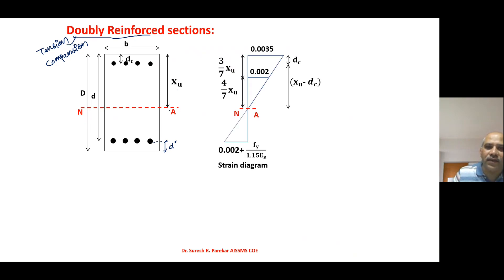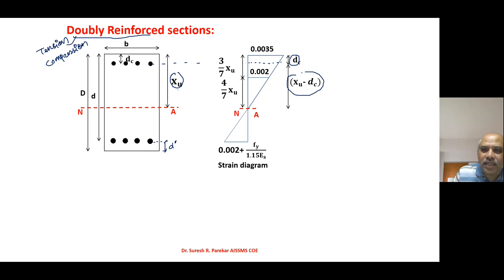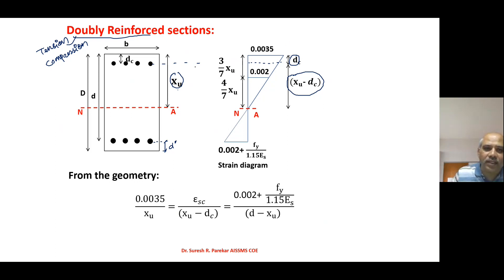Looking at the strain diagram, we consider symbols for the compression steel. We have dc, the distance xu, and from geometry xu minus dc. From the strain diagram: 0.0035 / xu = epsilon_sc / (xu - dc). For the region below the neutral axis: 0.0035 / xu = (0.002 + fy / (1.15 * Es)) / (d - xu).